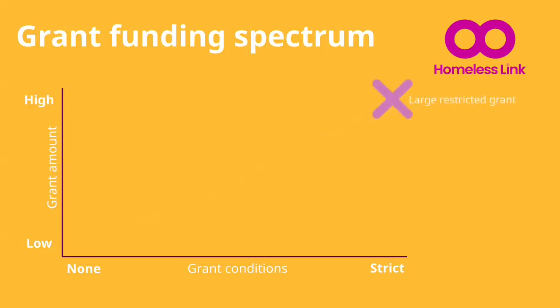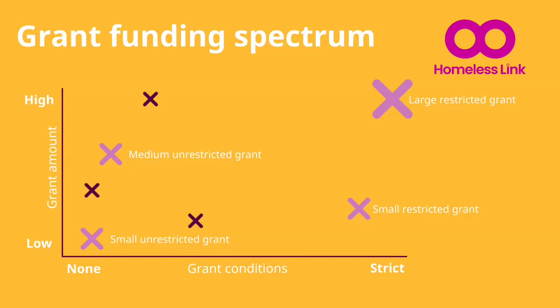Most large grants are restricted and come with conditions. But there are a number of funders who particularly support smaller charities with grants that are significant to those charities to help them develop, and they are largely unrestricted. Similarly, we might expect smaller amounts to have fewer restrictions — a thank you or an acknowledgement in annual accounts. But some small grants have really disproportionate expectations and conditions. In reality, conditions and amount can be unexpected, so it is important to understand the conditions, what they mean, and the risk they present to your charity.